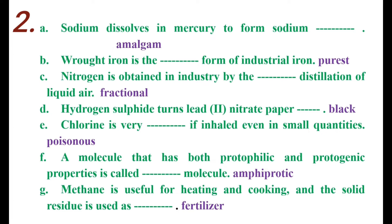Number C. Nitrogen is obtained in industry by the fractional distillation of liquid air.